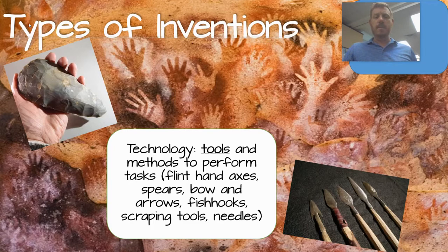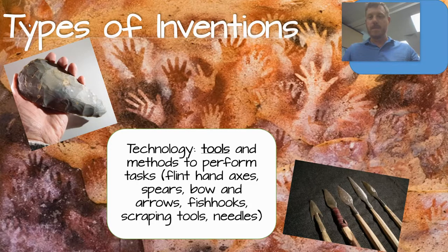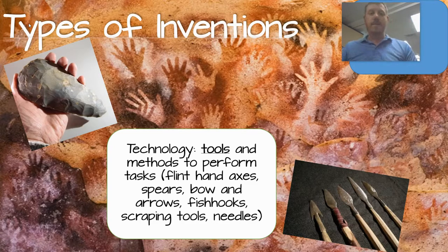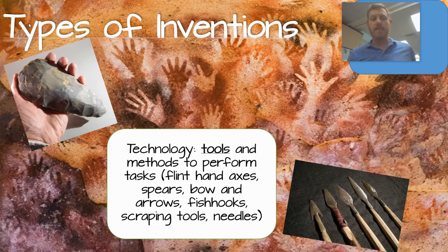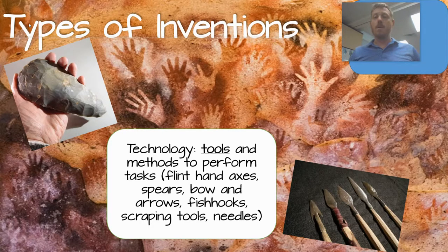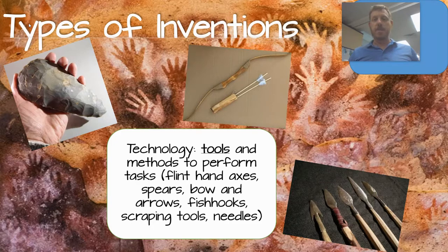They needed tools to scrape hides. When they would kill a large animal, they would use the fur for warmth — you have to scrape all the meat from the inside before you can dry it out and use it for clothing. They would fashion fish hooks to fish, and they also developed means of creating bow and arrows using stone-tipped arrows. You can see an example of bow and arrow there.